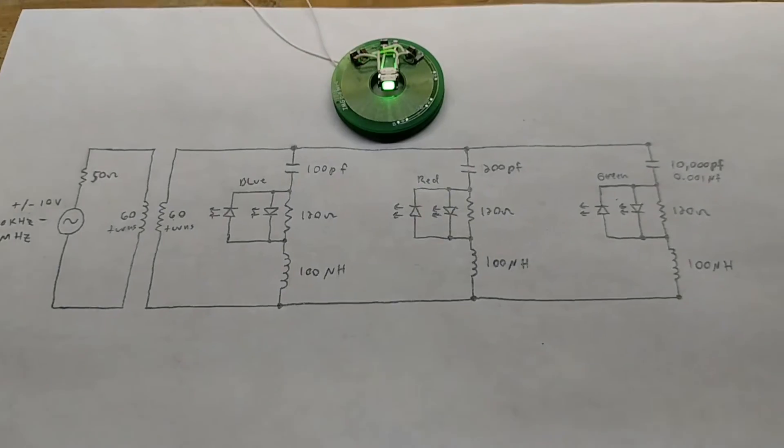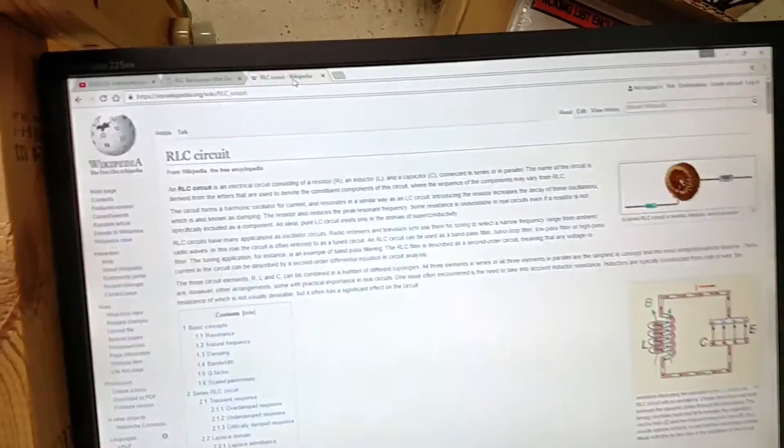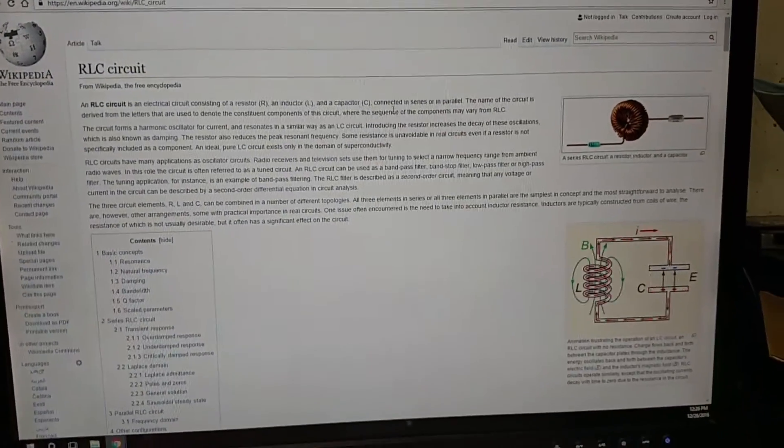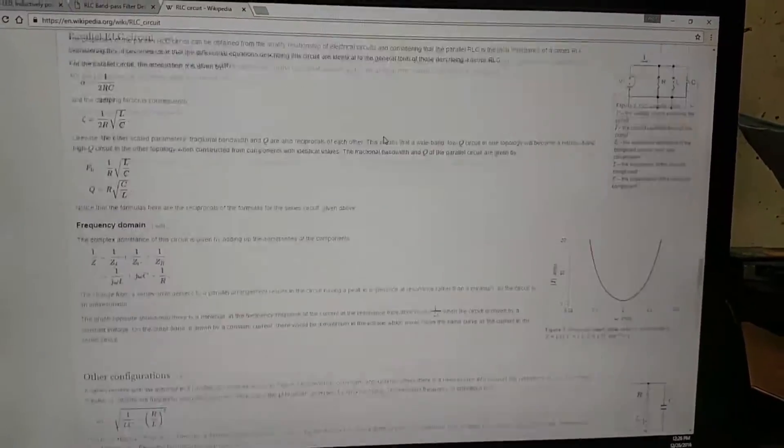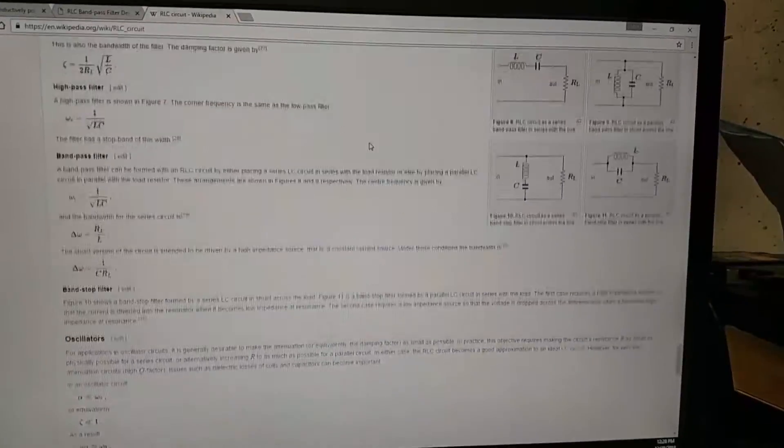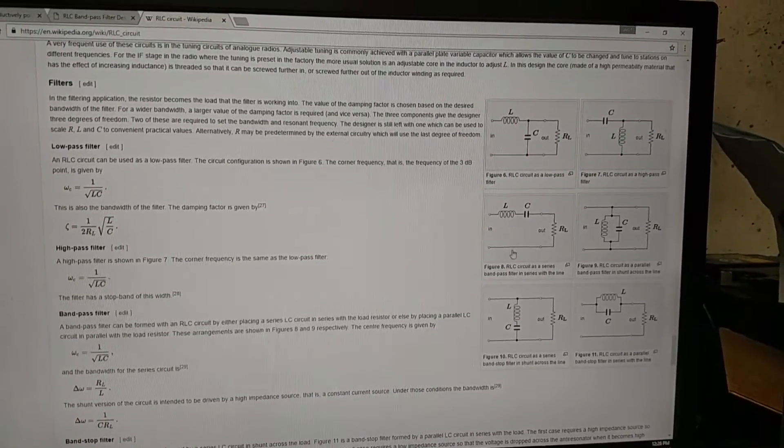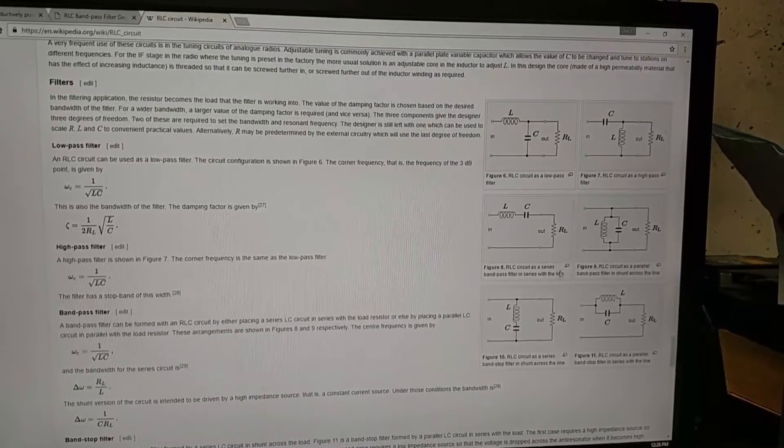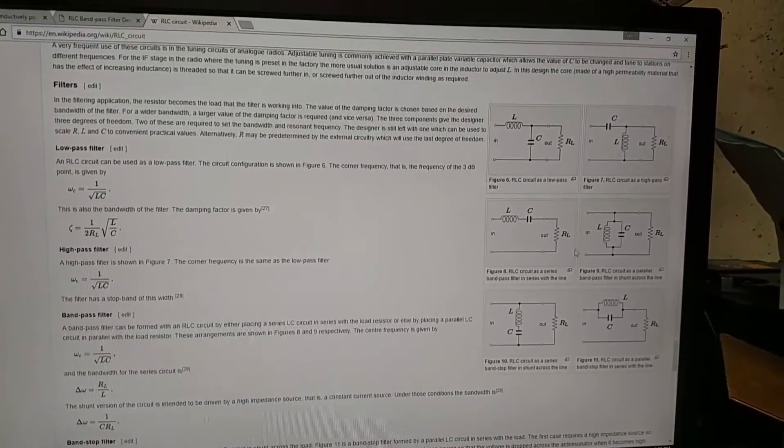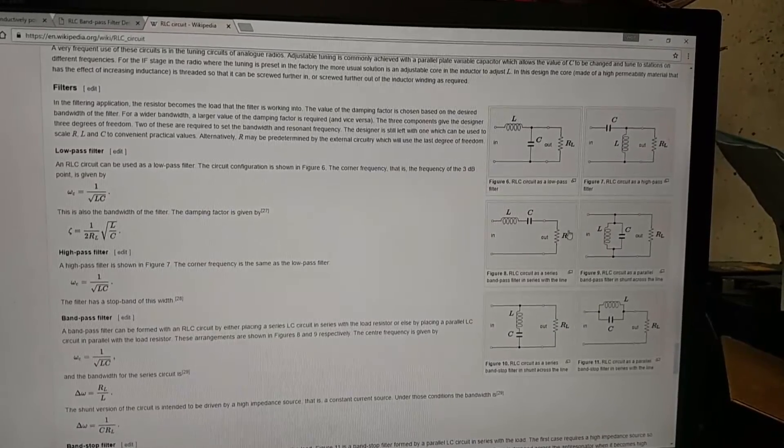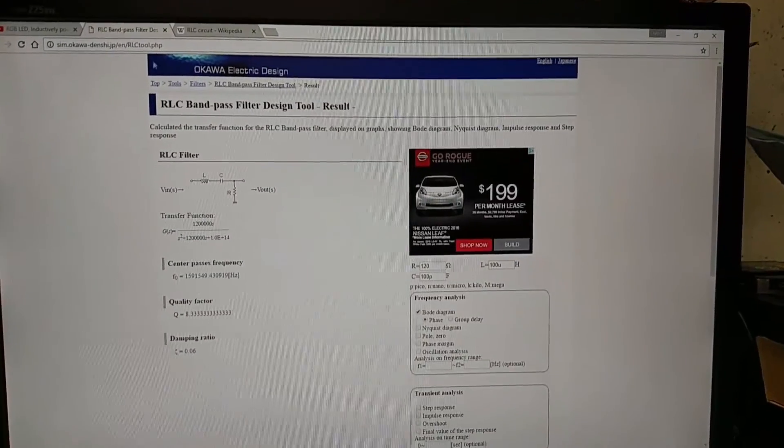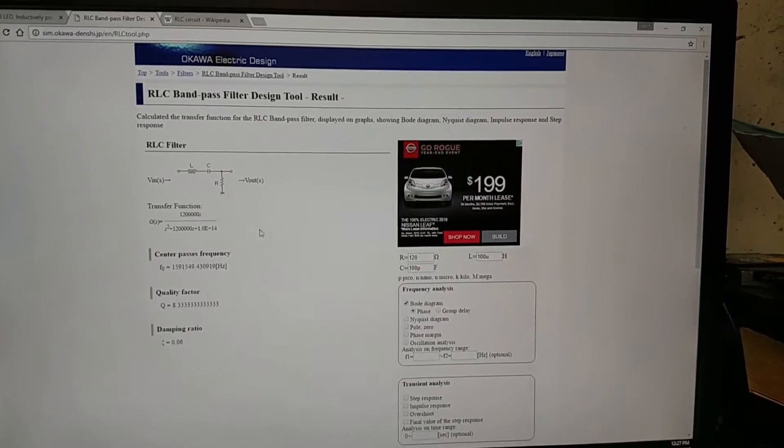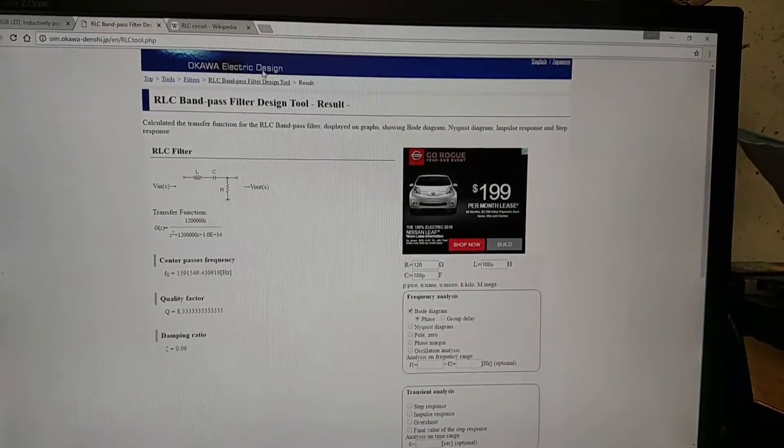You can go over to Wikipedia and they'll have all the math on what an RLC passband is. The one we're looking for specifically is the passband filter in series with the line. This is what we're doing. We've got our LED across here, both LEDs in both directions are across the resistor. You can use band pass filter design tools that are online. This one comes from Okawa Electronic Design.